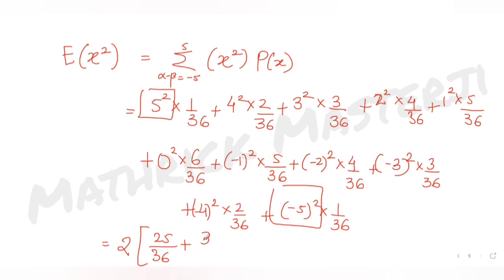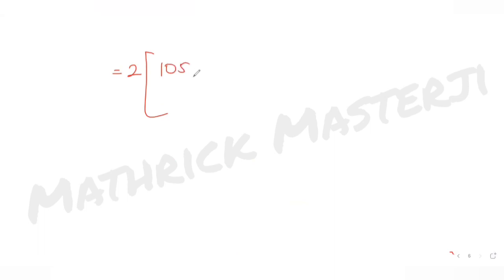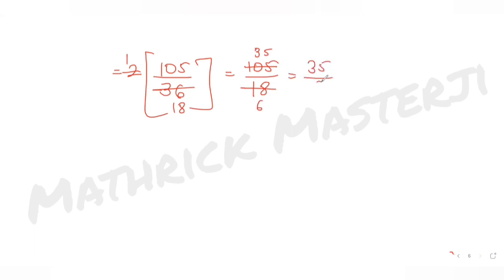Since squaring removes the sign, symmetric terms combine: 2 × (25/36) + 2 × (32/36) + 2 × (27/36) + 2 × (16/36) + 2 × (5/36) = (50 + 64 + 54 + 32 + 10)/36 = 210/36. Simplifying: 210/36 = 105/18 = 35/6. So E[X²] = 35/6.